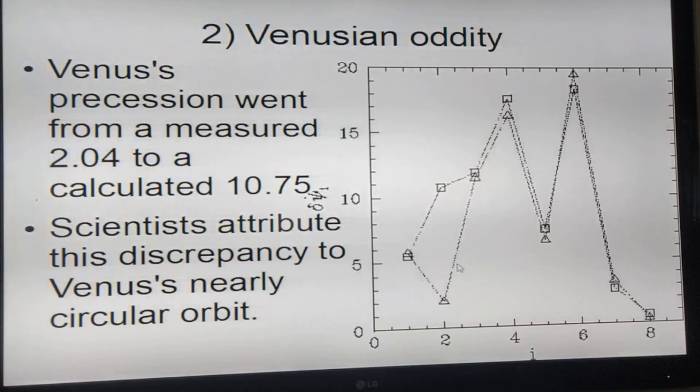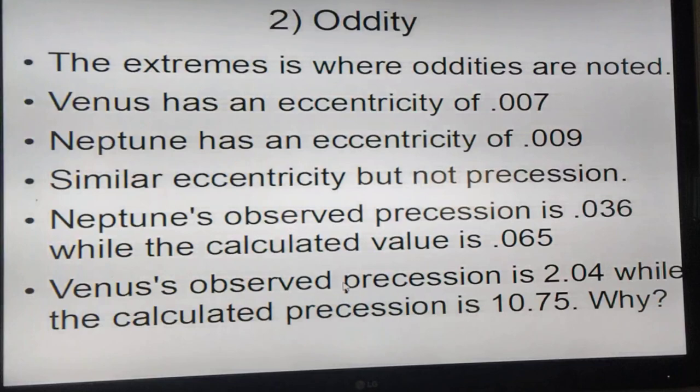Scientists figured it's because Venus's orbit is very nearly circular. Venus is almost a circular orbit with eccentricity of 0.007, almost perfectly circular. Neptune also has a very low eccentricity of 0.009. The eccentricity is very similar but the precession is not.